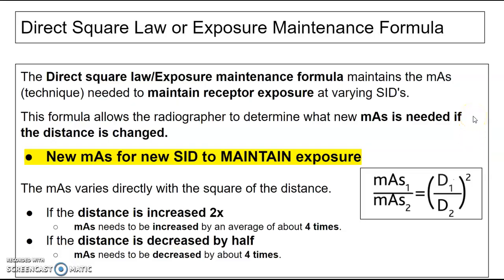So the direct square law or exposure maintenance formula maintains the mAs needed to maintain receptor exposure at varying SIDs. What does this mean? And you're going to use this formula if the question is asking you to figure out a new mAs for a new SID to maintain the exposure.